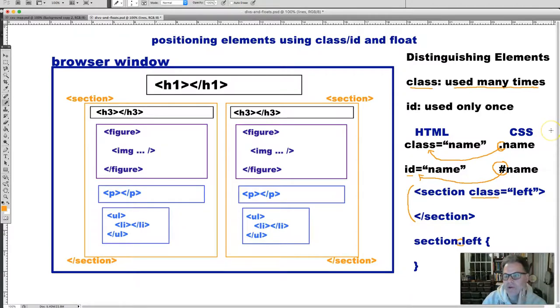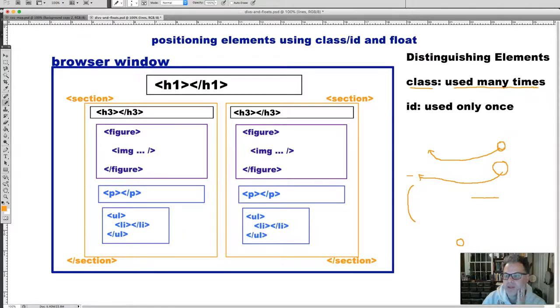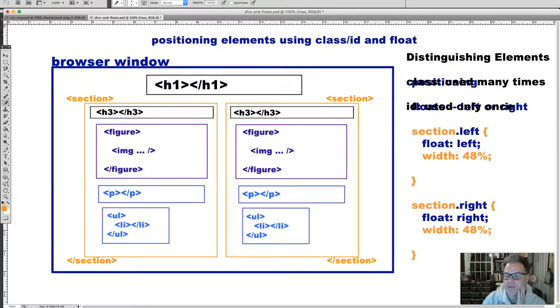So the question then becomes, how do we ensure that one thing is going to be one place and the other thing is going to be on another place? That is, how is something going to show up on the left-hand side of the screen or in the left-hand area? And how will something, for example, show up on the right-hand area? And we do that using something called floats.